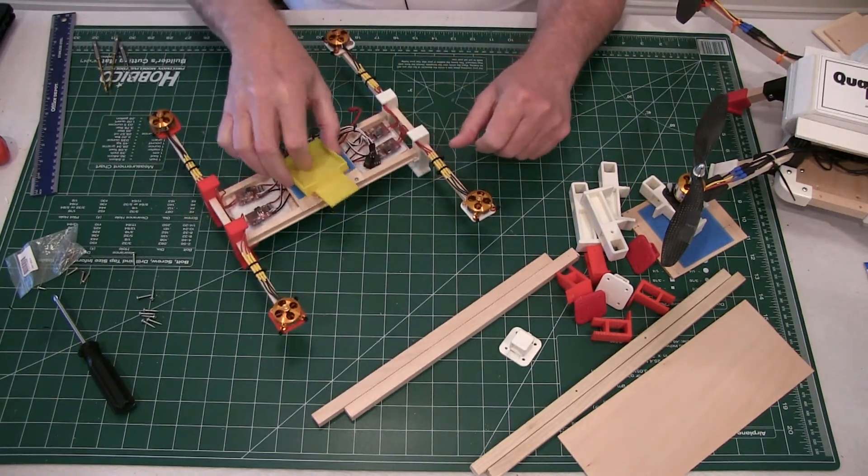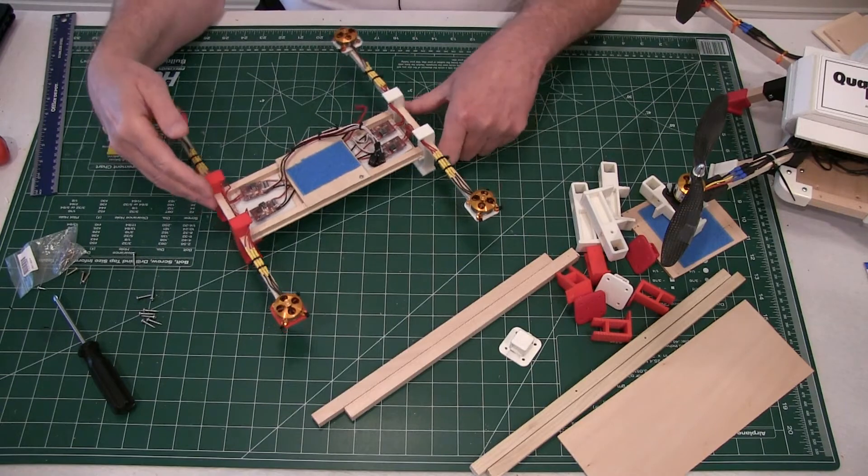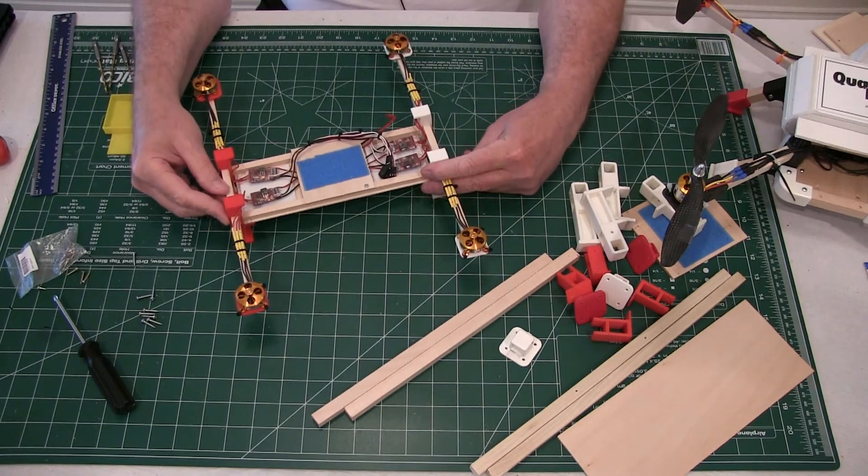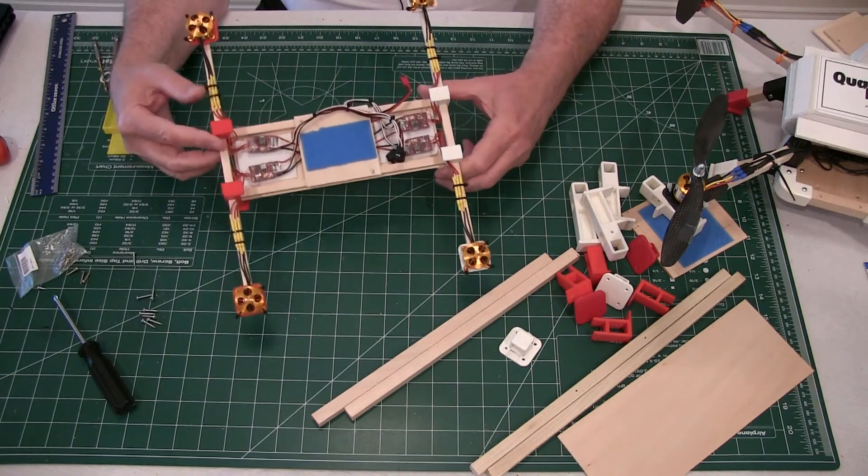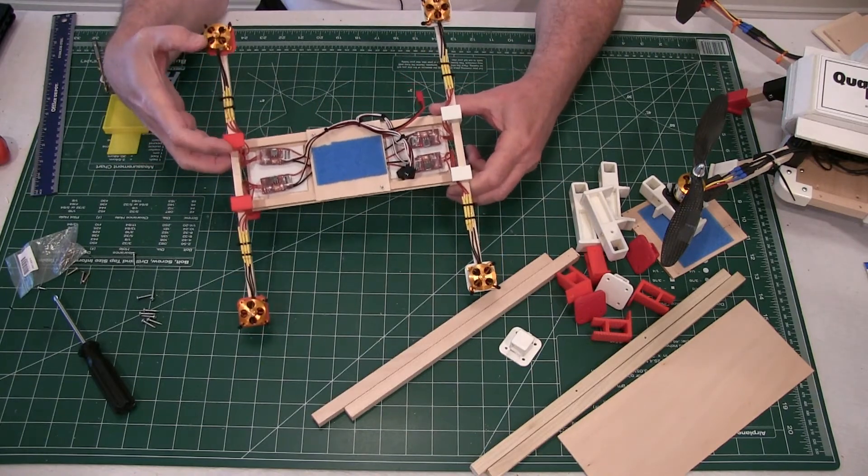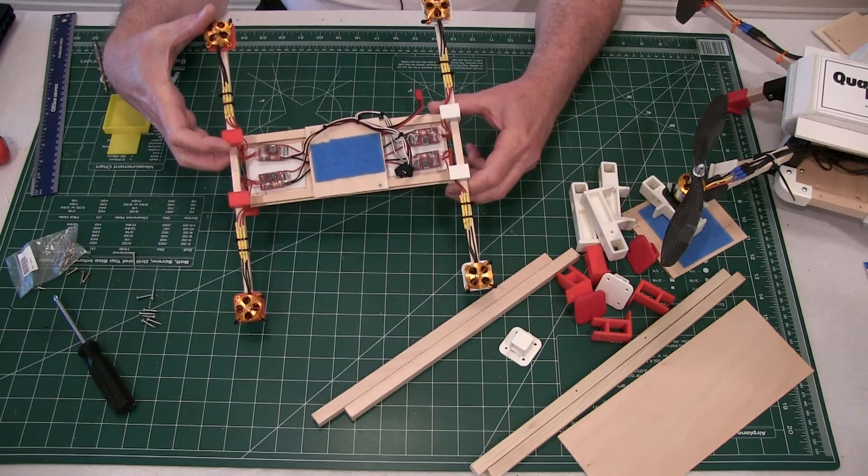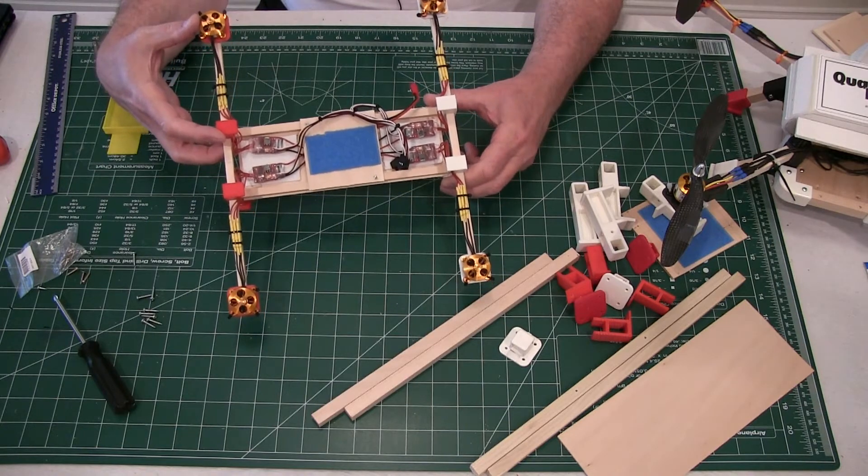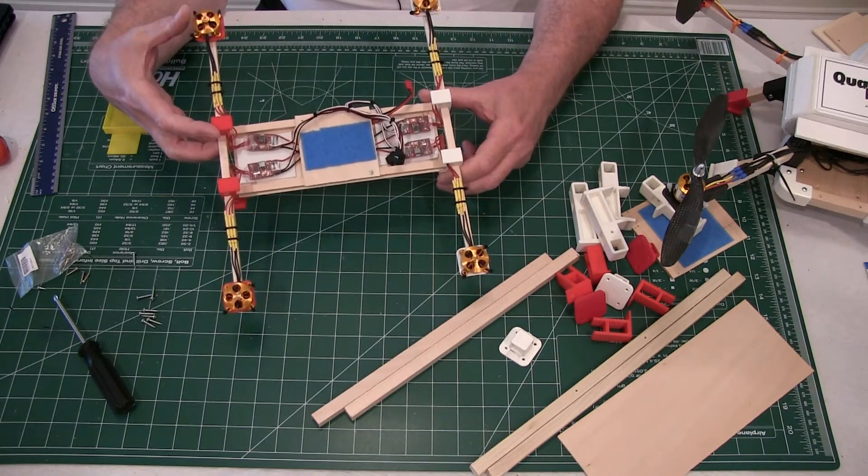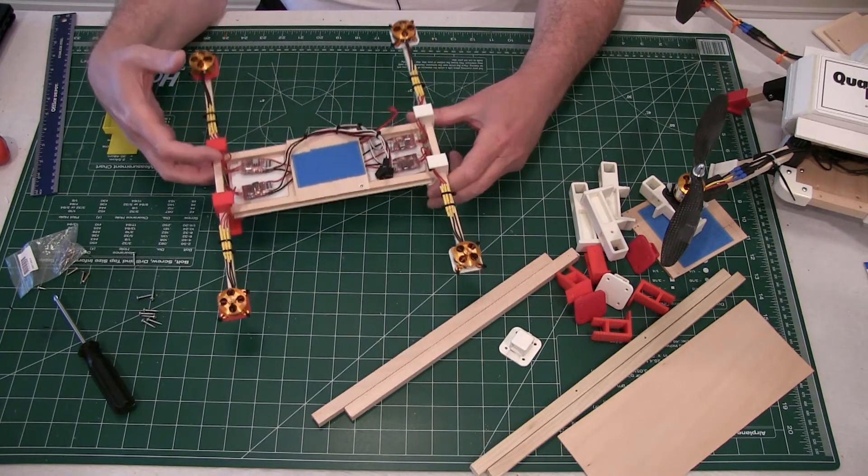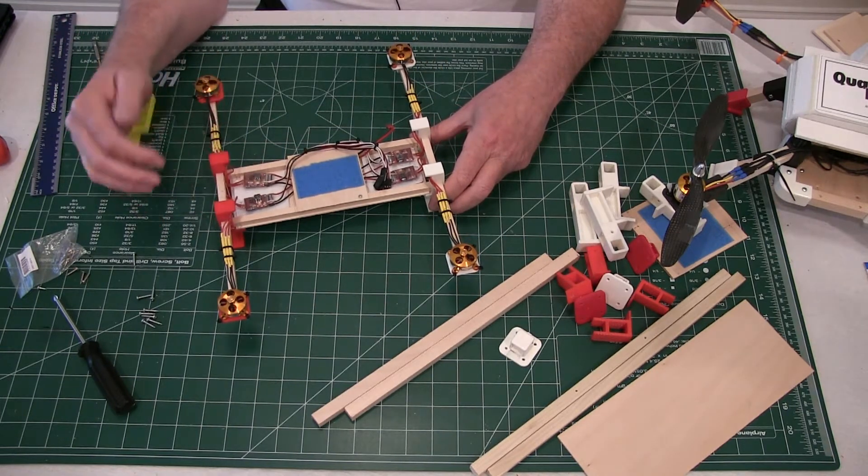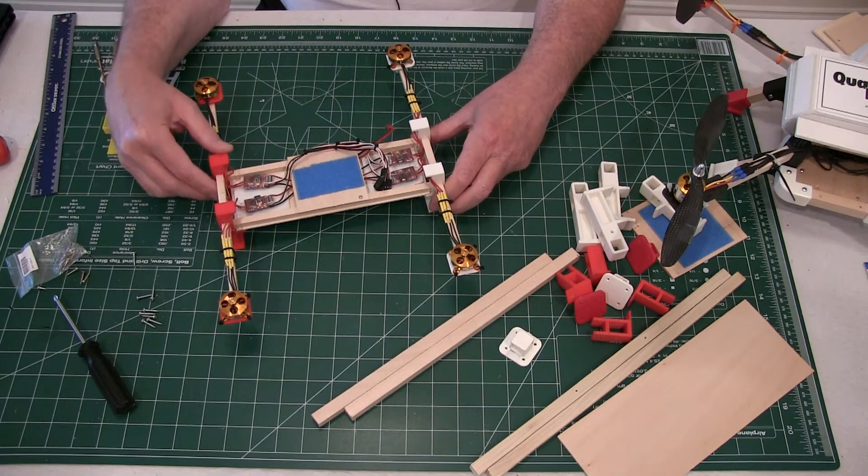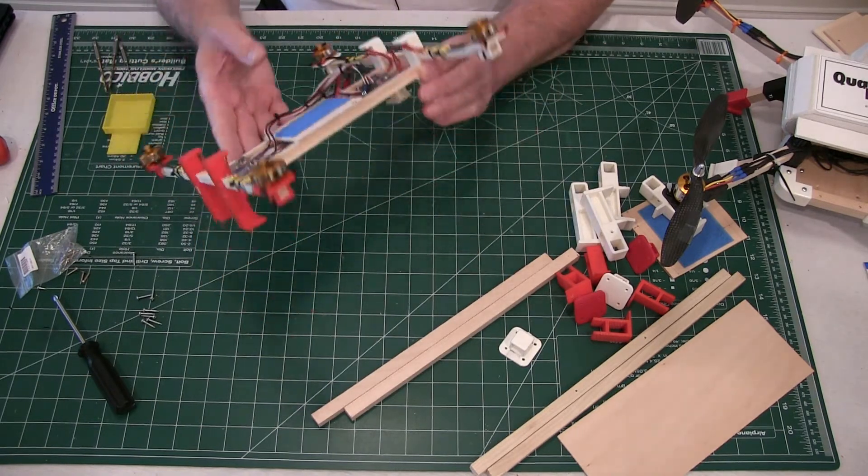On the mini we're running the 2404-14, 1400 KV motors, and we're running eight by four props on it with 10 amp ESCs.